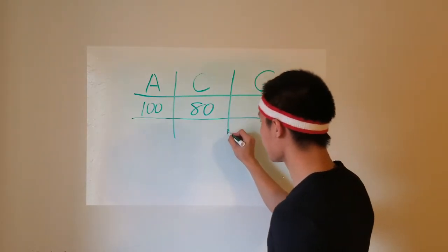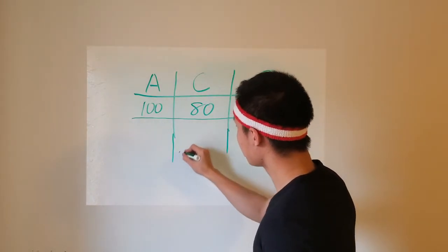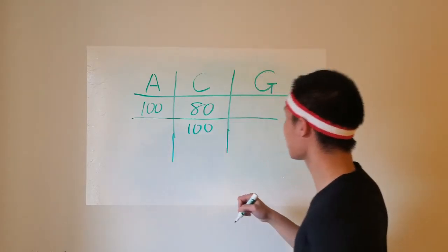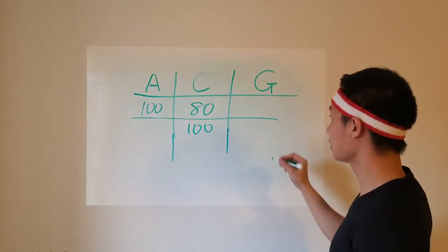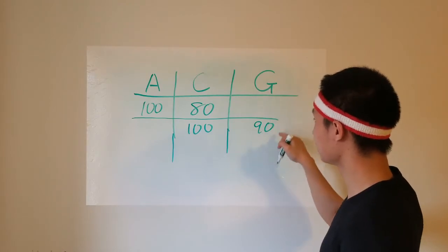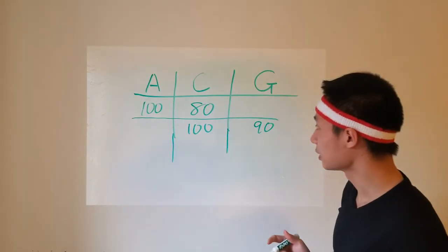In the second race, when C crosses the finish line, during the same amount of time, G only travels 90 meters because he's 10 meters behind.